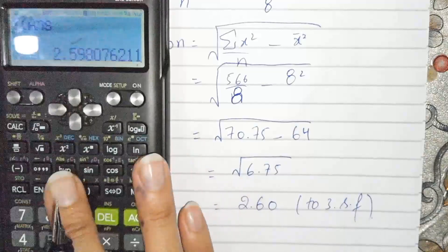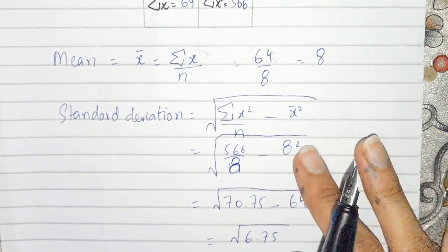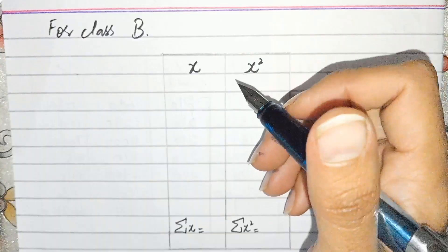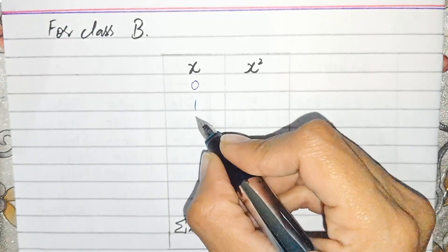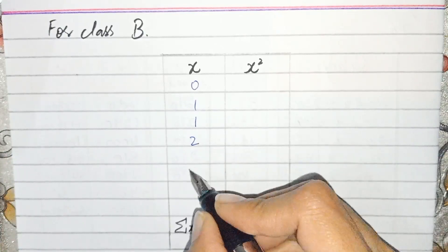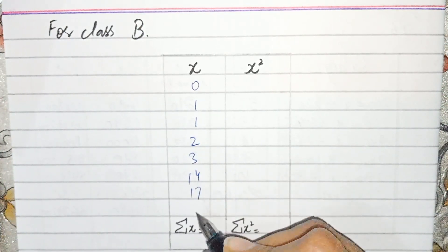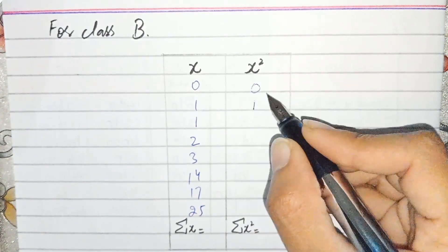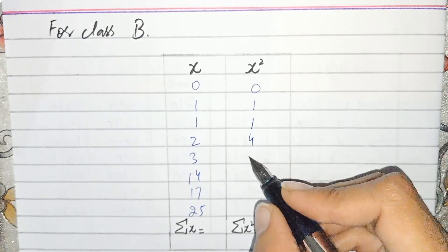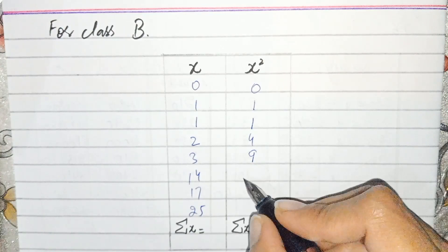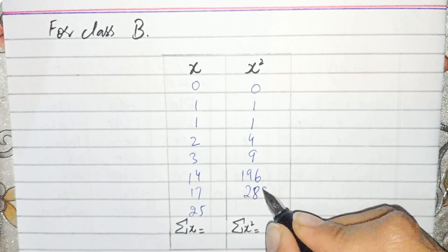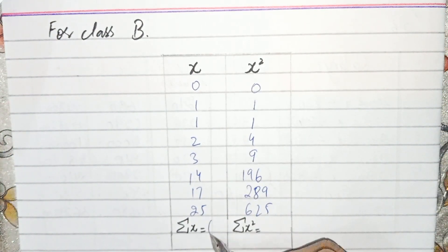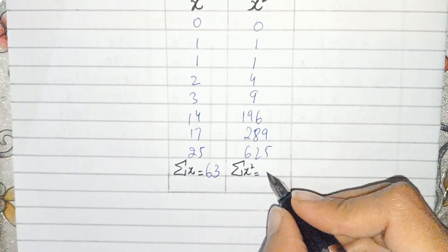This is the standard deviation and mean for Class A. Now for Class B, the x values are: 0, 1, 1, 2, 3, 14, 17, and 25. The squared values (x²) are: 0, 1, 1, 4, 9, 196, 289, and 625. Adding the x values gives 63, and adding the x² values gives 1125.